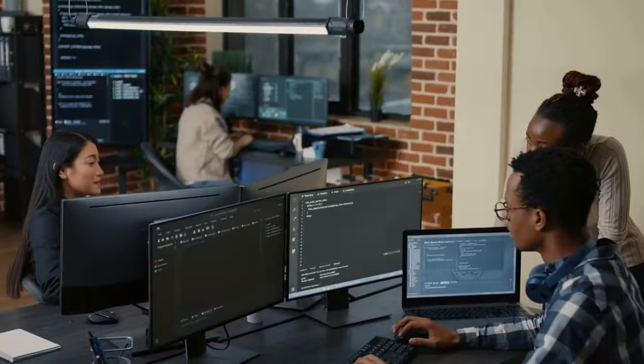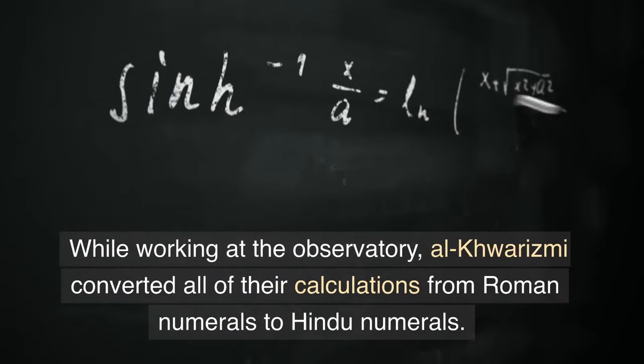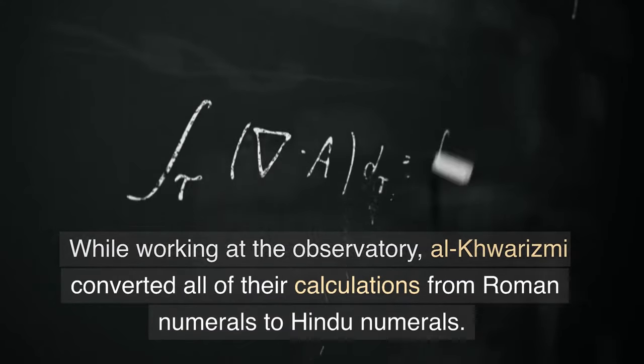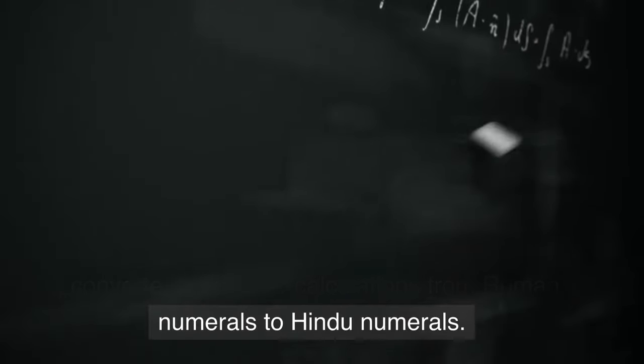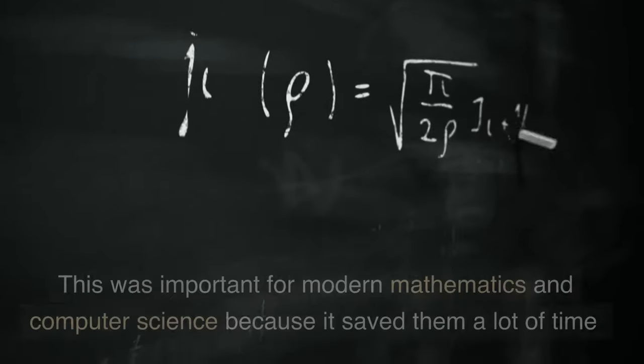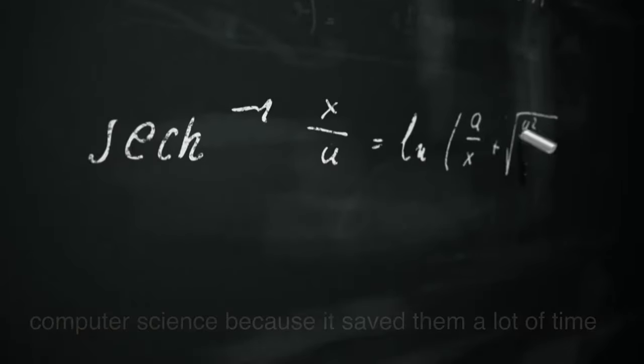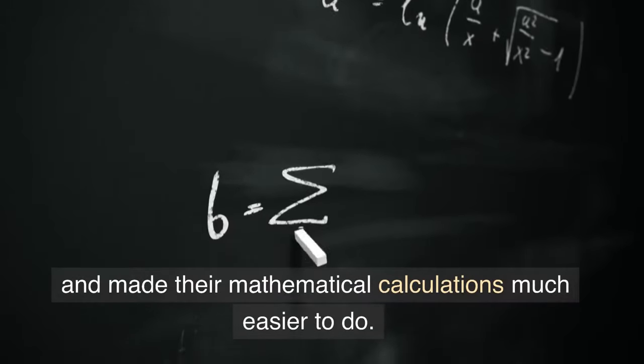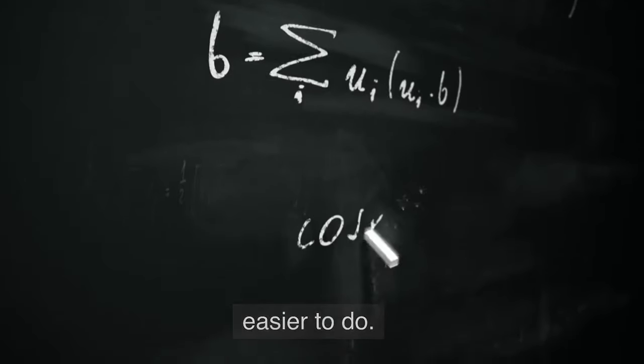While working at the observatory, Al-Khwarizmi converted all of their calculations from Roman numerals to Hindu numerals. This was important for modern mathematics and computer science because it saved them a lot of time and made their mathematical calculations much easier to do.